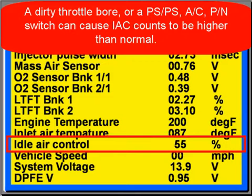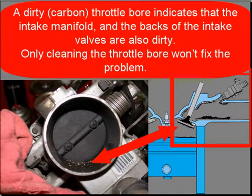A dirty throttle bore, a power steering pressure switch, an AC switch, or a park/neutral switch can all cause IAC counts to be higher than normal. So don't forget the dirty throttle bore along with all those switches if the idle air control is higher than normal.